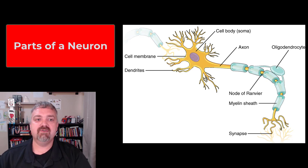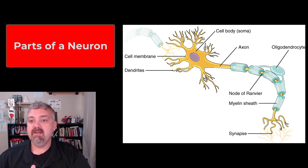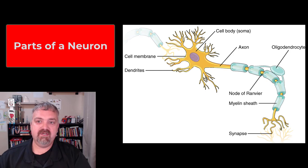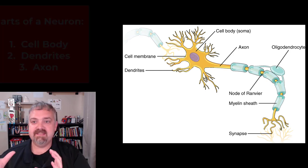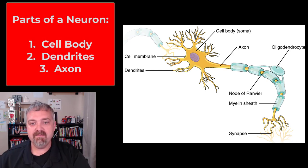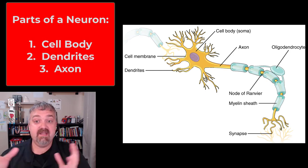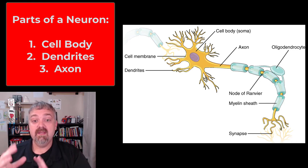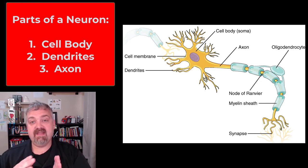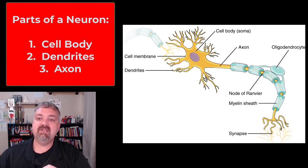We'll cover the different types of neuron structures in probably the next video. But a typical neuron is going to be made of three primary structures. You have the cell body, also known as the soma. You're going to have dendrites — there can be several, there can even be a hundred or more — and then you're going to have that single axon going down to the synapse. Let's talk about each of these things just for a moment.